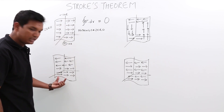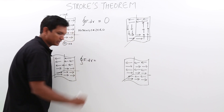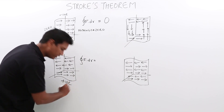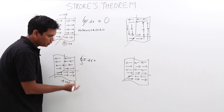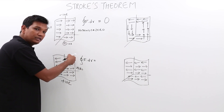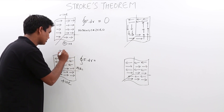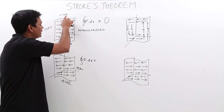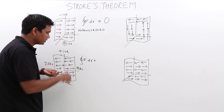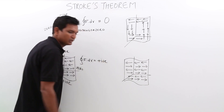Now, if I try to calculate for figure 2, f dot dr — for this side, again it is along the line, so it would be a positive quantity. Along this side, it is perpendicular, so it would be 0. Along this side, I am moving along that direction, so it would be a positive quantity. Again on the last side, it would be 0. So, positive plus positive — f dot dr over the line integral would be some positive number.